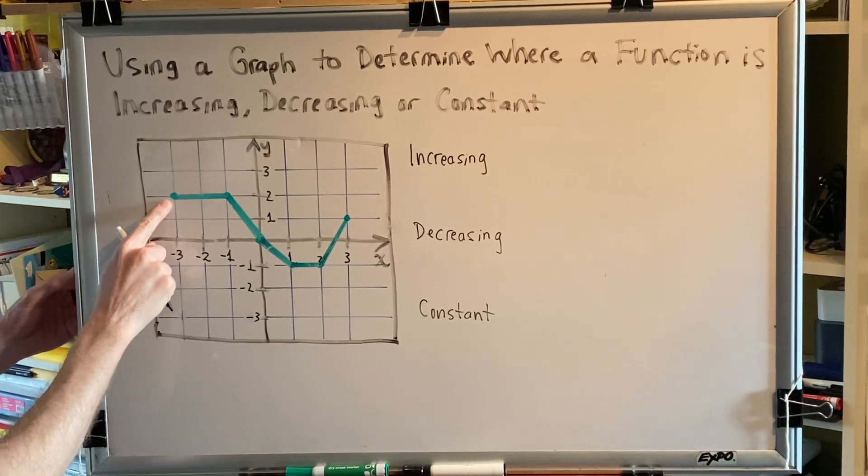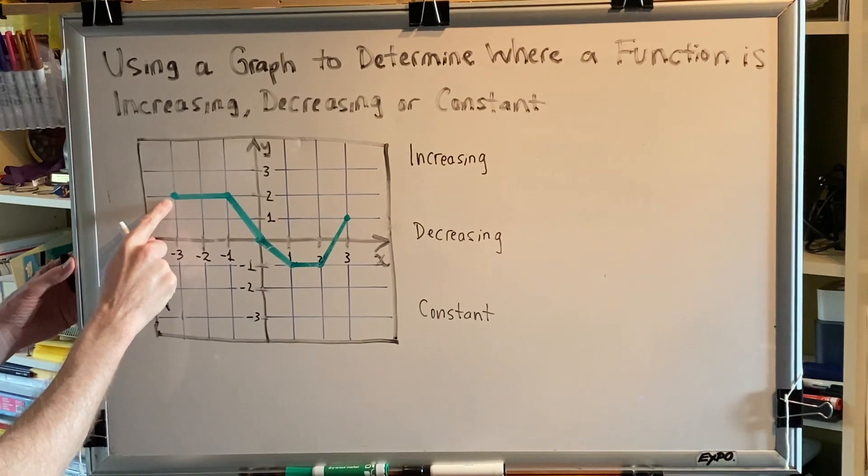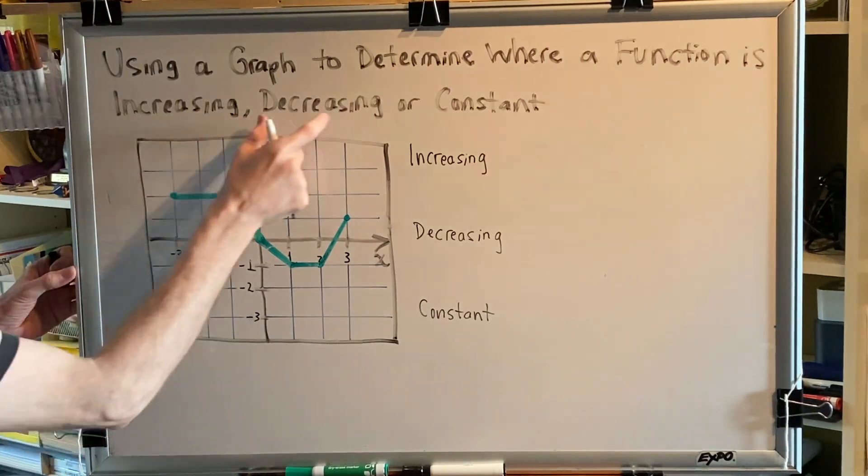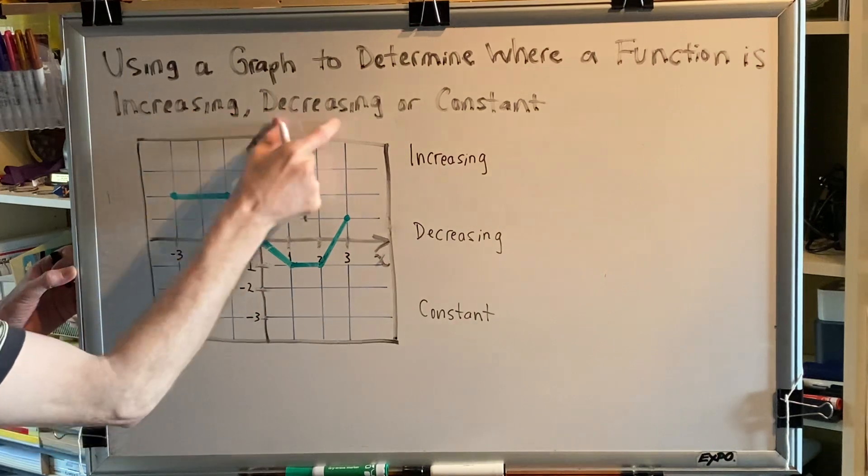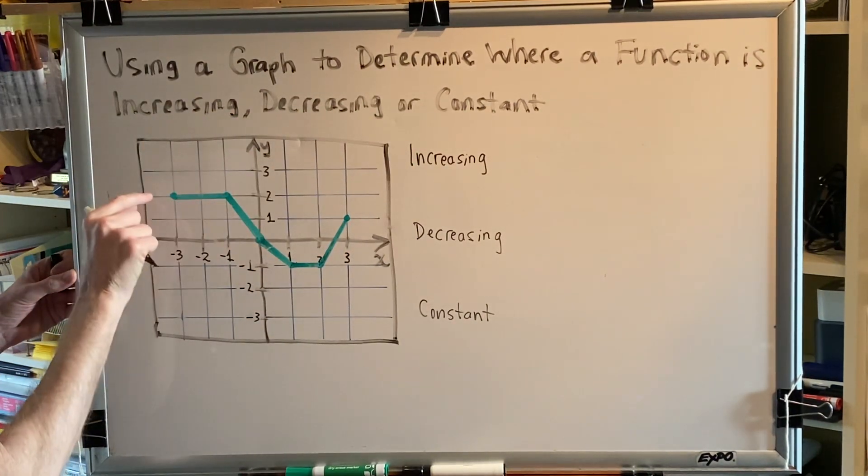We're going to start at this location and we're going to note the x-coordinate at each location where the graph changes from one category to another: increasing, decreasing, or constant. We begin here in the first category, constant, because we're not going up or down.